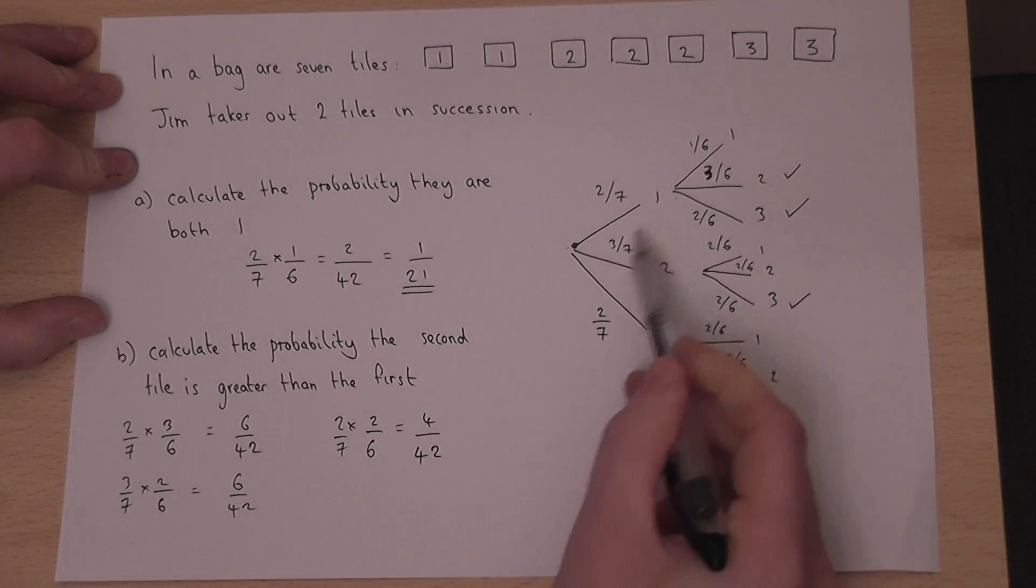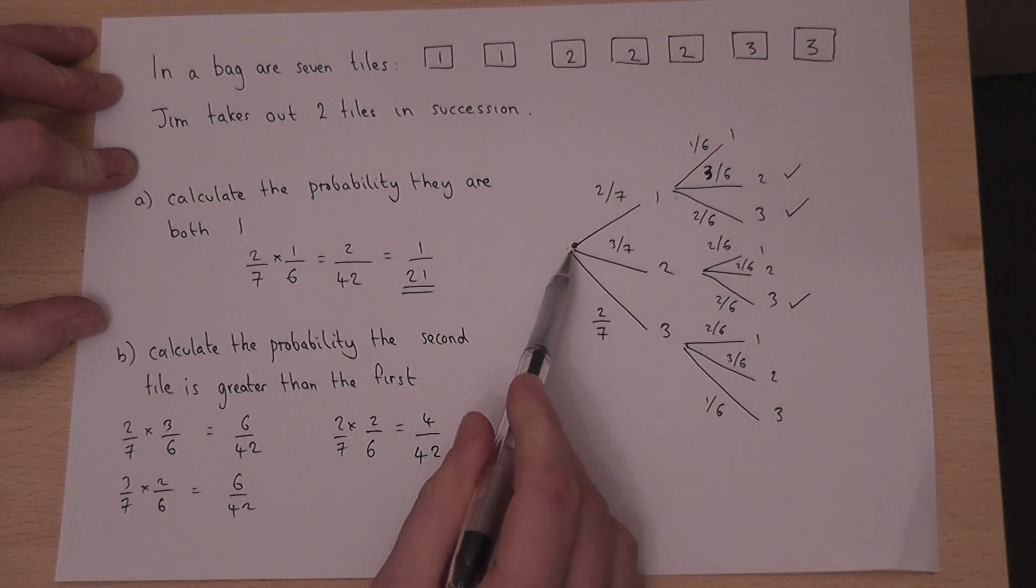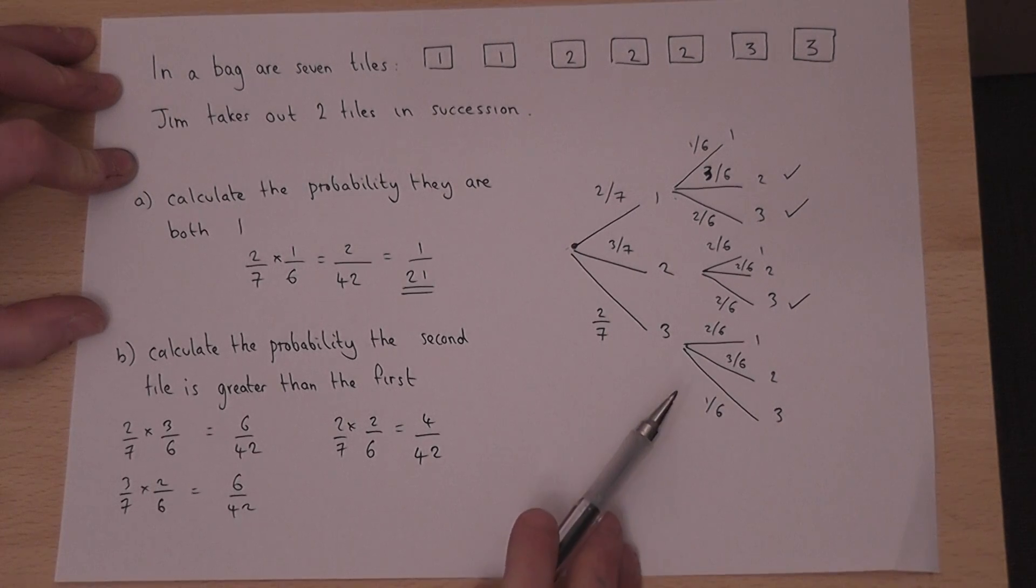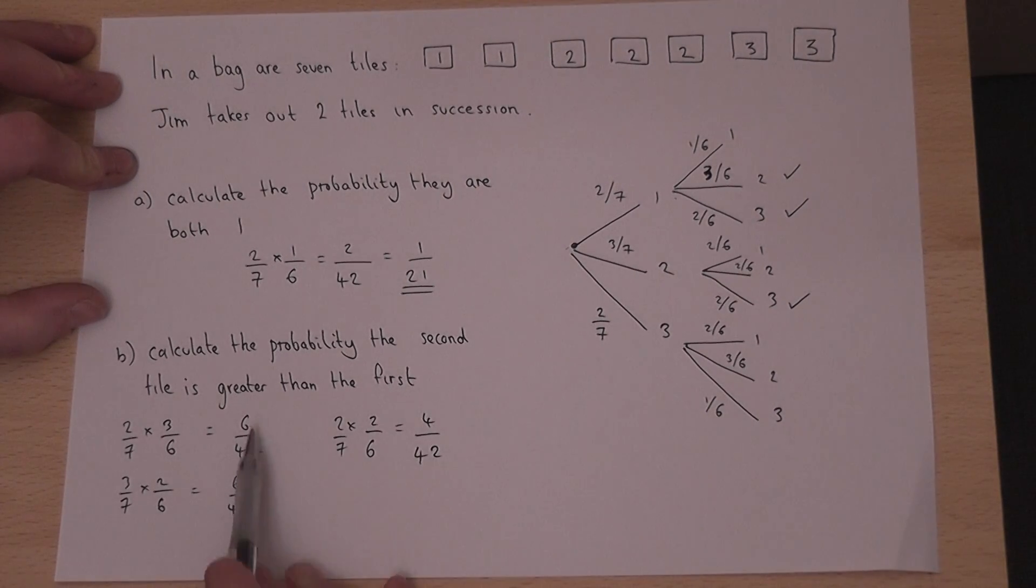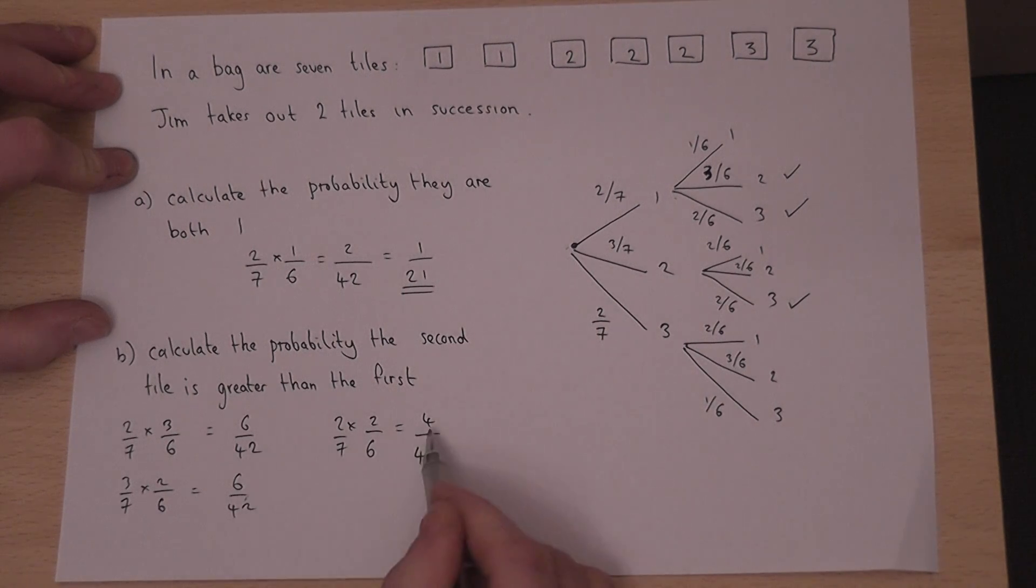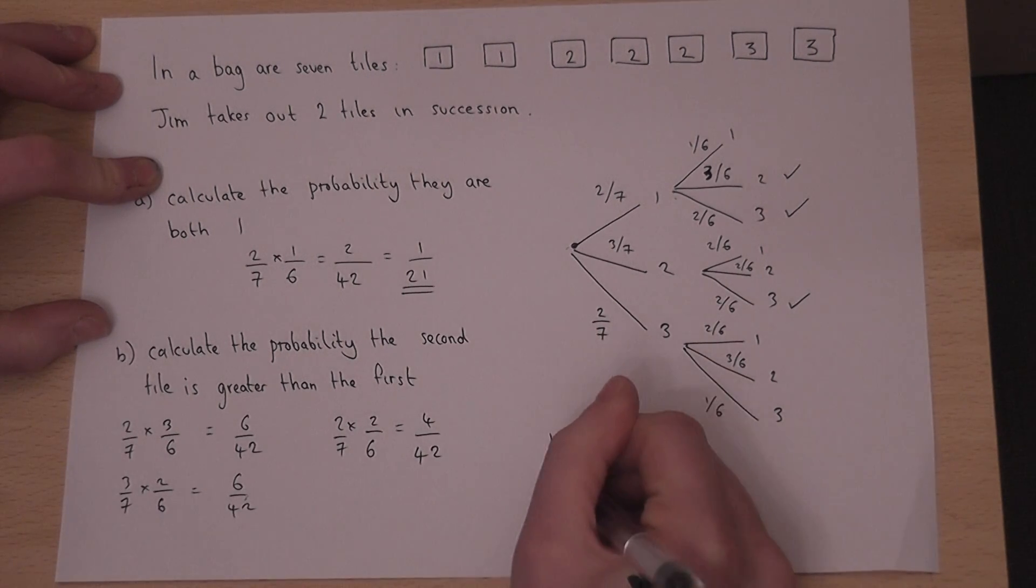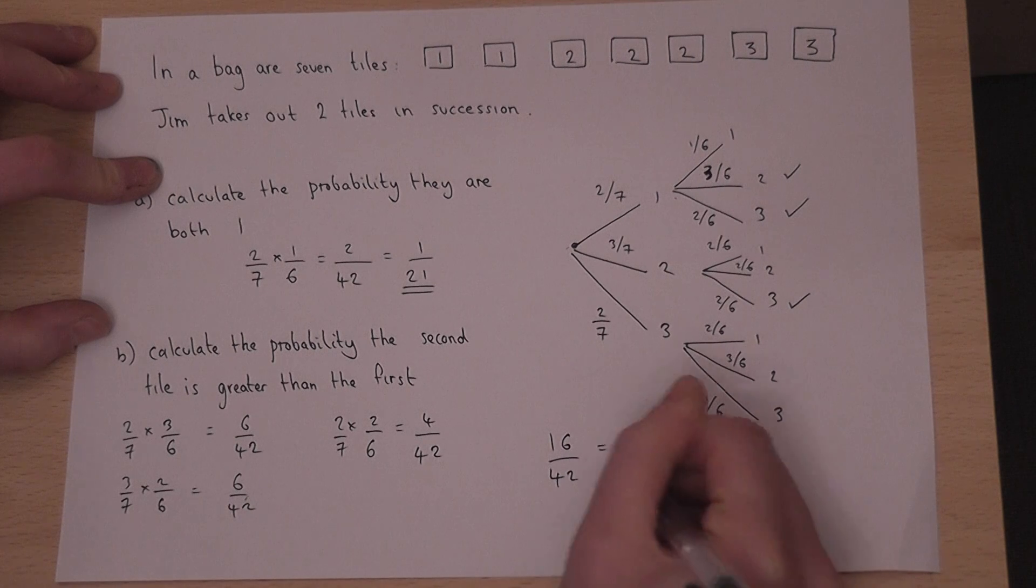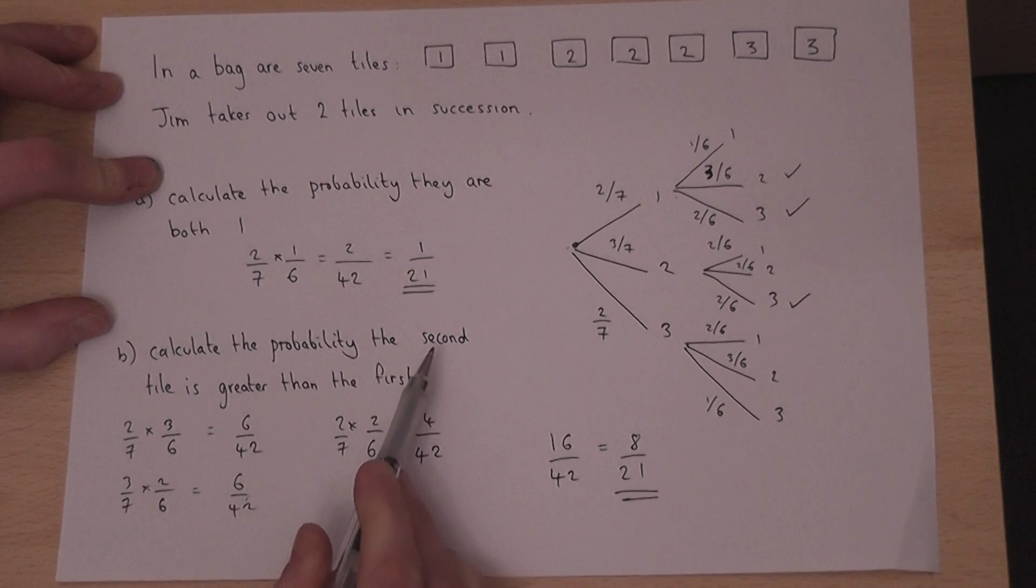And therefore to answer the question, we'll just add together the three fractions. Six plus six plus four, we get sixteen out of forty-two, or eight over twenty-one. So the chance the second tile is greater than the first is eight over twenty-one.